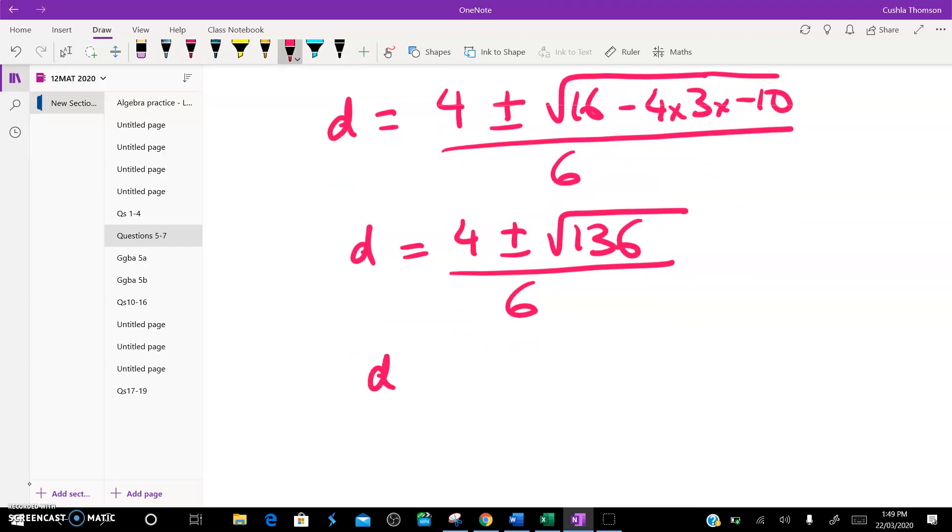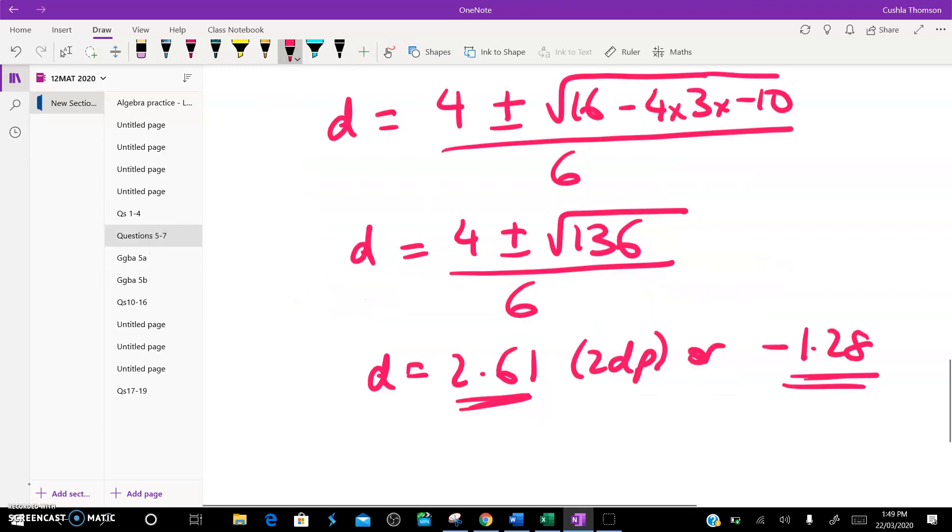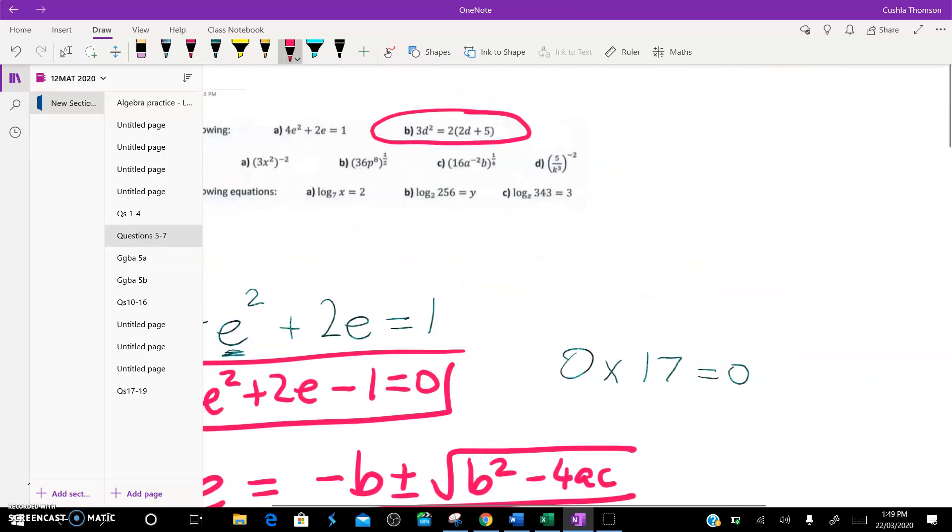Okay, so d is equal to 2.61 to 2 decimal places or negative 1.28. Let's look at the geogebra picture of that and see if it worked. Yep, you can see there's my 2.61 here. And here's negative 1.28 here. Right, okay, so that's all of the quadratic stuff I'm going to do in this video.